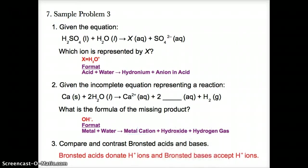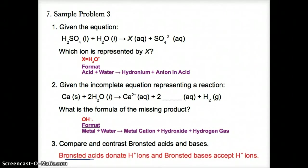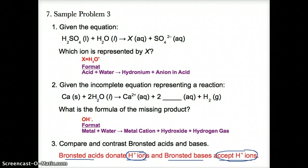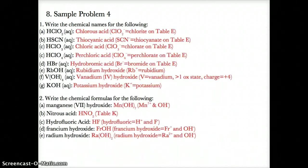Number three: compare and contrast Bronsted acids and bases. Bronsted acids donate H+ while Bronsted bases accept H+. Bronsted acids will donate or lose H+ ions, whereas Bronsted bases will accept or gain H+ ions. Finally, in sample problem four, we have to write the chemical names for these acids.